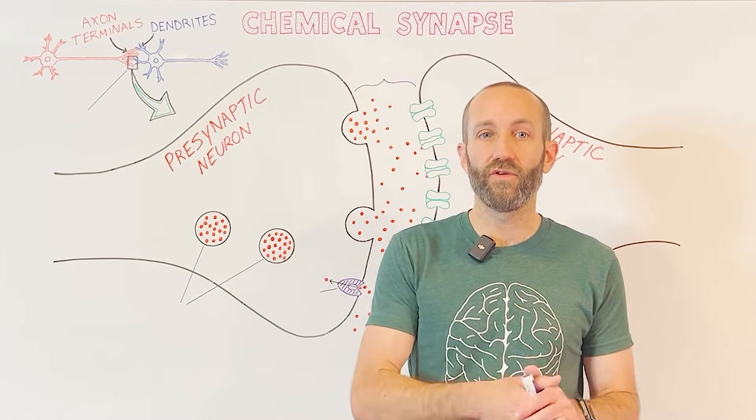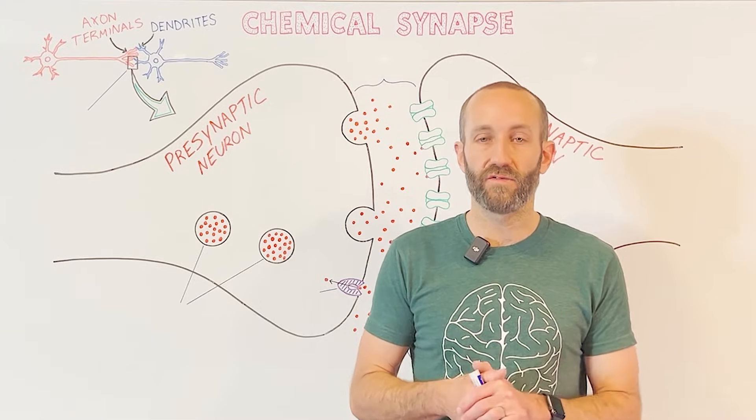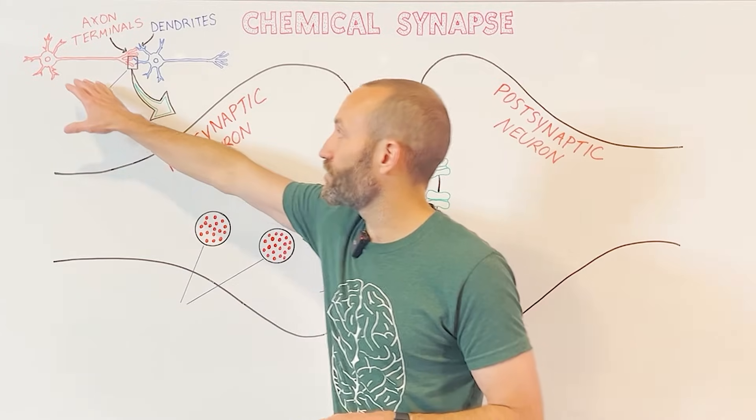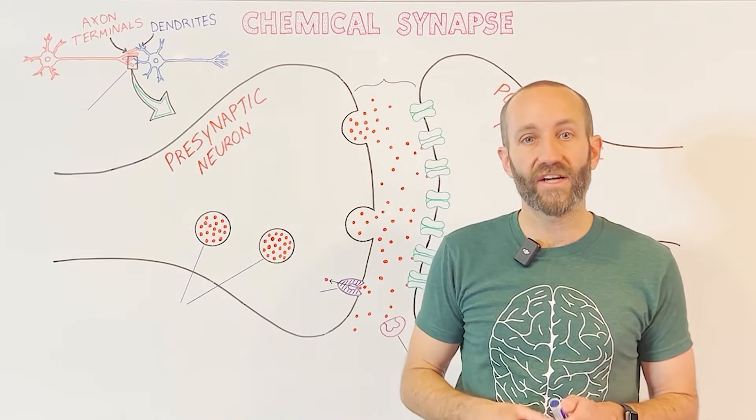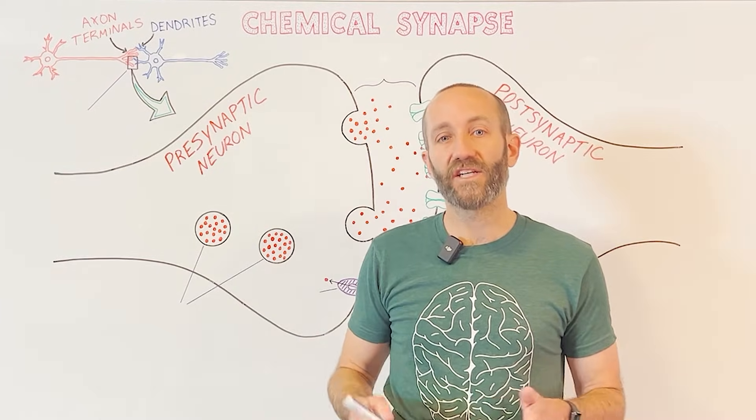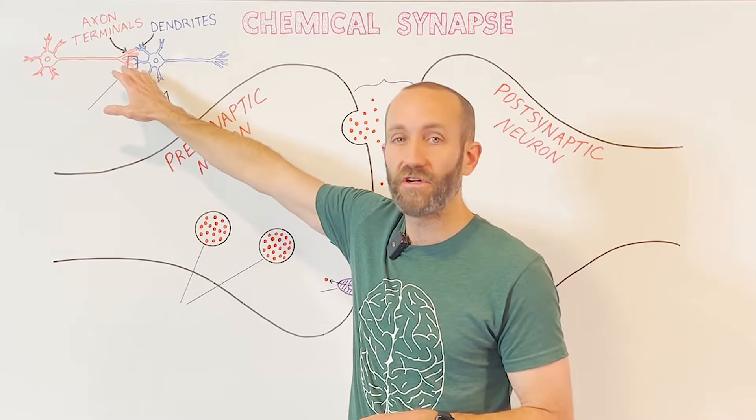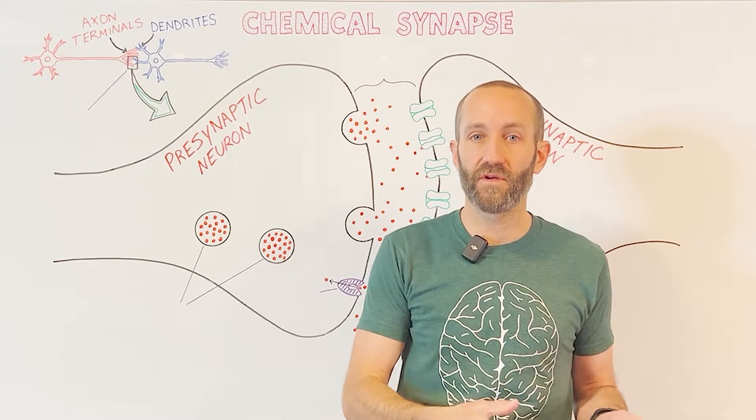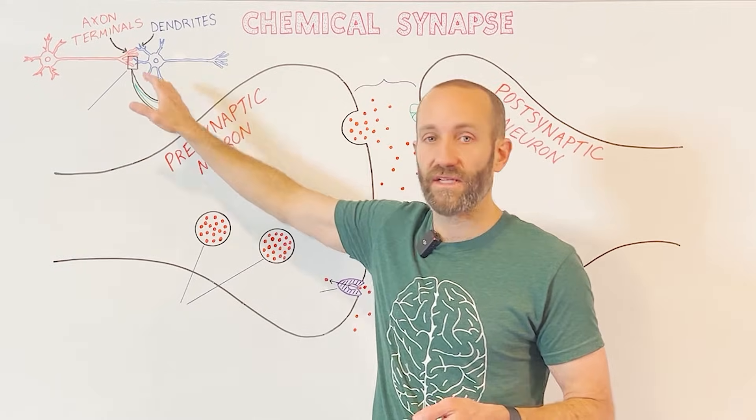Most neurons rely on both electrical and chemical signaling to spread messages throughout the brain. Electrical signals are mostly used to send messages from one end of a neuron to another. These are called action potentials. But once that action potential has reached the end of a neuron at regions known as axon terminals or synaptic boutons, it usually needs to prompt the release of a chemical signal to pass the message to the next neuron.